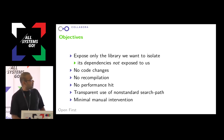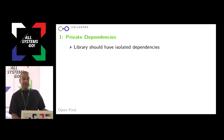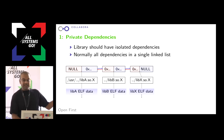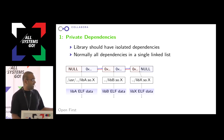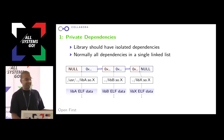Let's go through this and see how many of these objectives we can achieve. What are the pieces of the puzzle we're going to need? First: private dependencies. A library should have isolated dependencies. Normally there's a single link list, effectively, of all the dependencies in your program space. Everything comes from there — there's no segregation. So we need to defeat that somehow. Worst case scenario, we'd have to rewrite the linker, and I really don't want to do that.